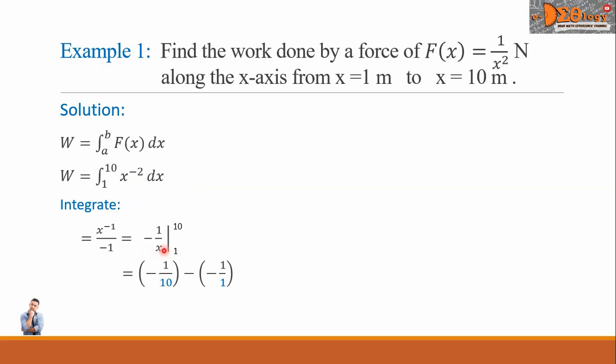So the next step now is to write negative 1 over 10 minus negative 1 over 1. In this second fraction, 1 over 1 is simply 1. While negative and negative becomes positive. So we write here plus 1. And the sum will give us 9 over 10. Our unit of measurement will be joules. Because F of X is in Newton, while the X is given in meters. This is the final answer. This is the work done.